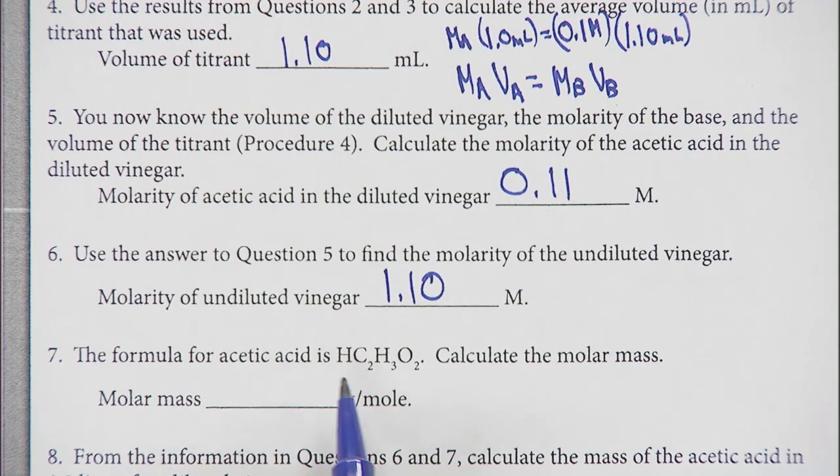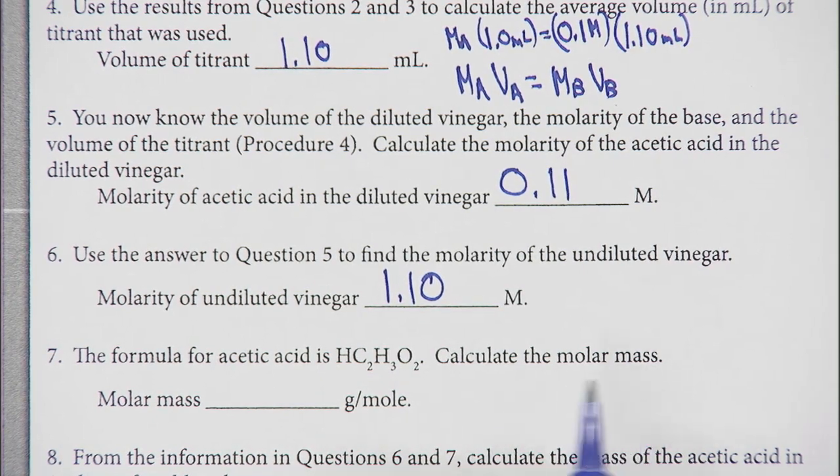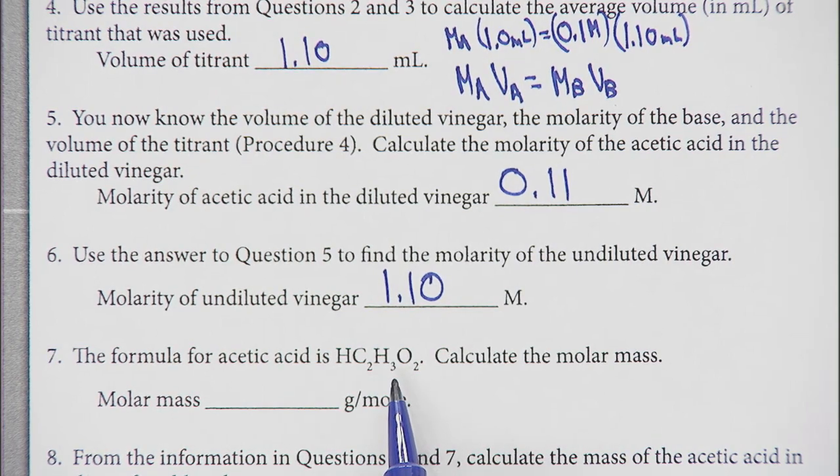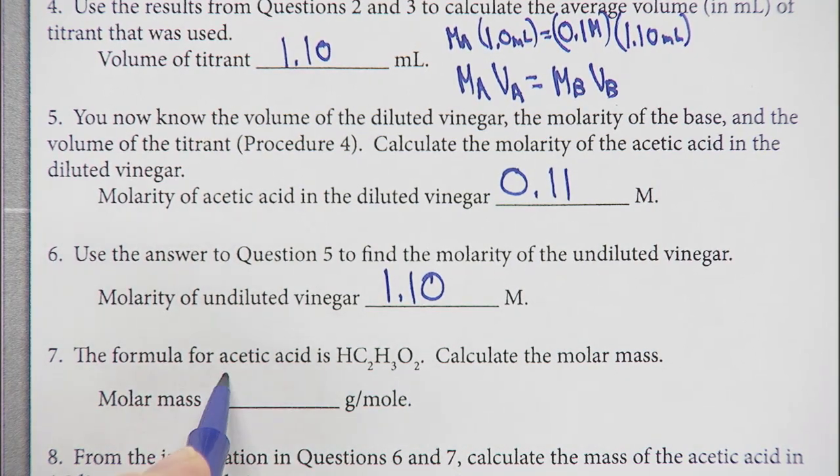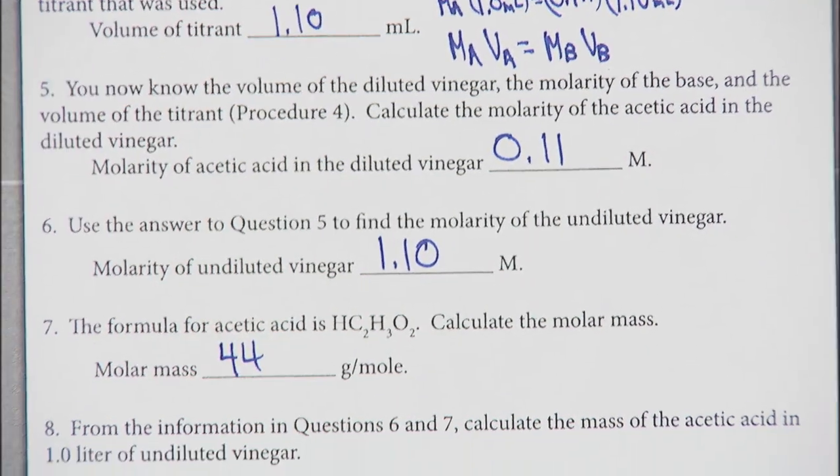The formula for acetic acid, HC2H3O2, we have to calculate the molar mass. We've got 2 carbons at 12, that's 24. A total of 4 hydrogens, that's 4. 2 oxygens at 8, that's 16. You add that together and you come up with approximately 44 grams per mole.